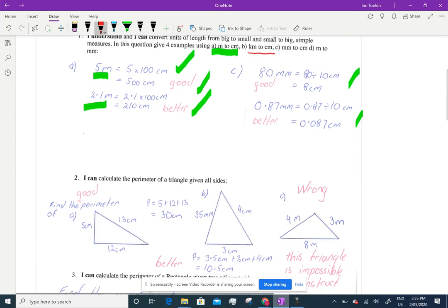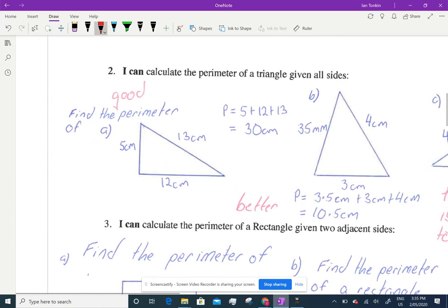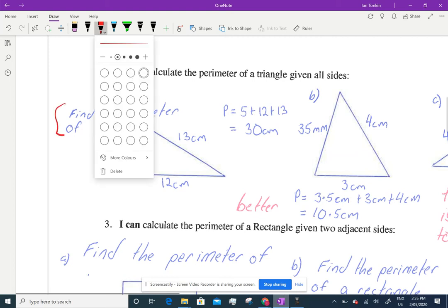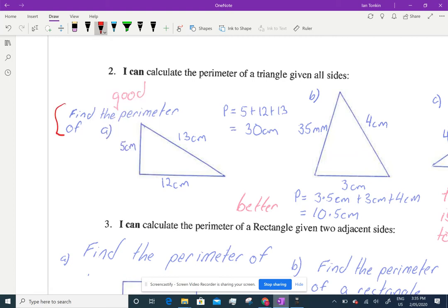Now, what about this one here? I can find the perimeter of a triangle. Well, this one's good. It's a nice, easy right angle triangle. Remember, you've got to write the question here. Find the perimeter of. And I've got a diagram. Here's my triangle. And then I've got my working. Here's my solution. Five plus 12 plus 13, 30 centimeters. And I put the units. Now, that's good.